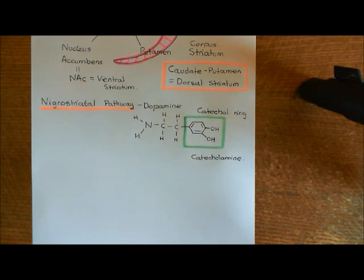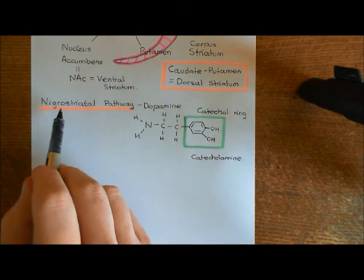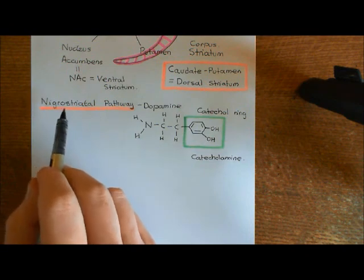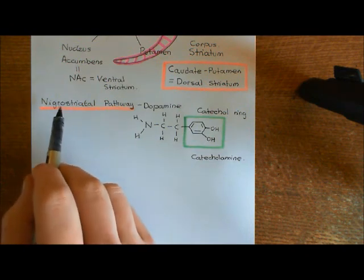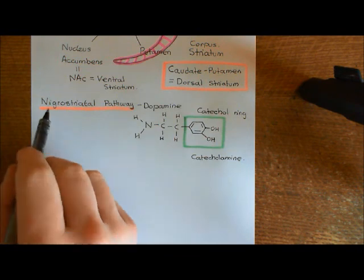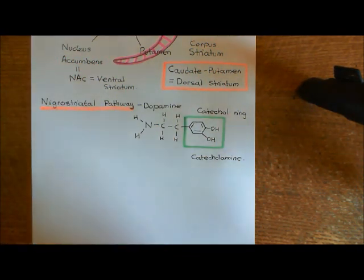What I now want to show you is this pathway from the substantia nigra pars compacta to the dorsal striatum, which is known as the nigrostriatal pathway.